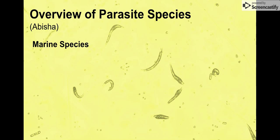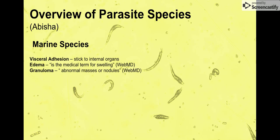This is really just an overview, so if you want to look more into it that's up to you. In general, these marine species of parasite nematodes can be found via visceral adhesion — meaning they stick to internal organs.